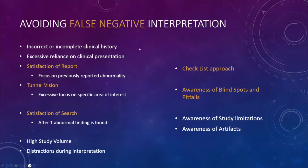We are going to focus on false negatives — when we miss abnormalities. Why do we miss abnormalities, especially if they are there on the images? There are many reasons, and there's been increased awareness of perceptual problems and how we search through images. We don't actually look at all the images, and there are also certain psychological problems. Let's go through that.